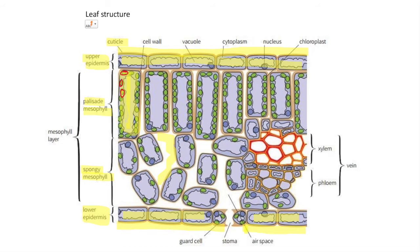In the spongy mesophyll, there's a lot of air spaces to facilitate diffusion of carbon dioxide and oxygen in and out of the cells. It also contains this vascular bundle.